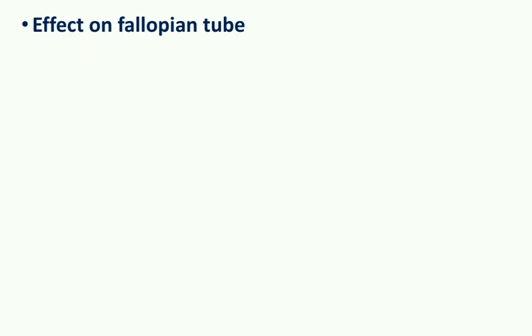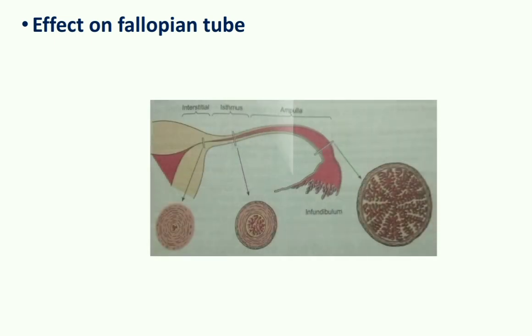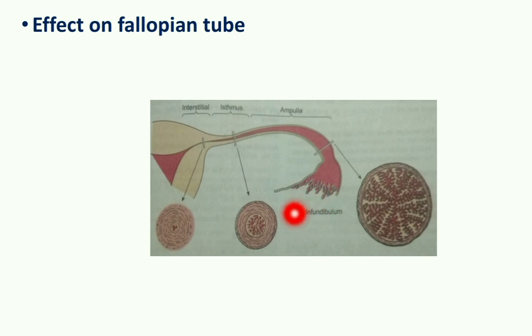Effect on the fallopian tube: Estrogen increases the number and size of epithelial cells present on the mucosal lining of the fallopian tube. It also increases cilia movement and enhances proliferation of glandular tissue in the fallopian tube. The fallopian tube includes the fimbriated end, the infundibular part which lies in close contact with the ovary, the ampulla, the isthmus, and the interstitial part.